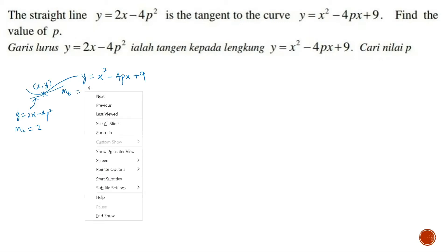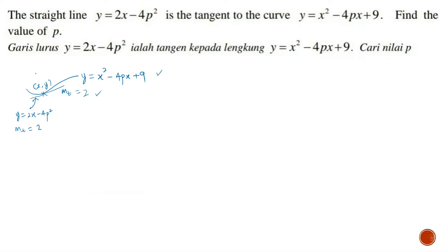Now, out of all three pieces of information, as long as we have any two, we can proceed. We do not know the point that the tangent passes through, but that doesn't matter — we have these two. We know that mt is always equivalent to dy/dx, and therefore dy/dx equals 2.